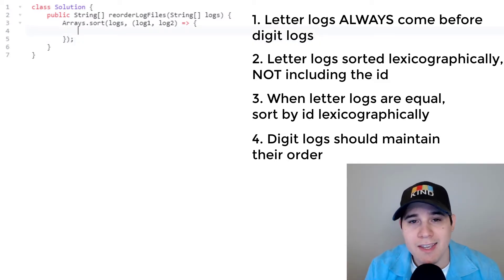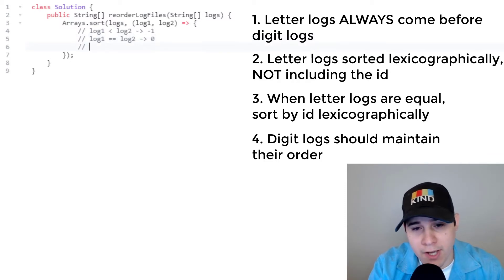So this lambda function is taking the place of a comparator class. So this is prevalent in really any language. So I could say log one is less than log two, that would mean I return a negative number. If I were to say log one is equal to log two, then I return a zero. And then finally, if log one is greater than log two, then I return a positive number. So using this logic, this is how we're going to implement those rules.